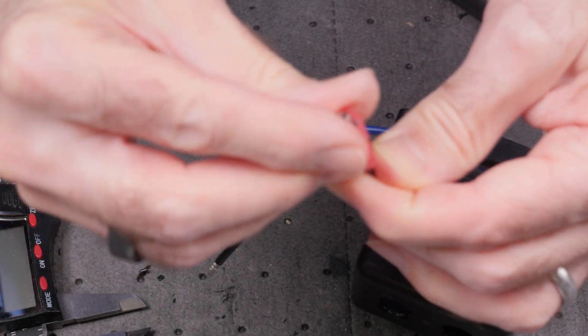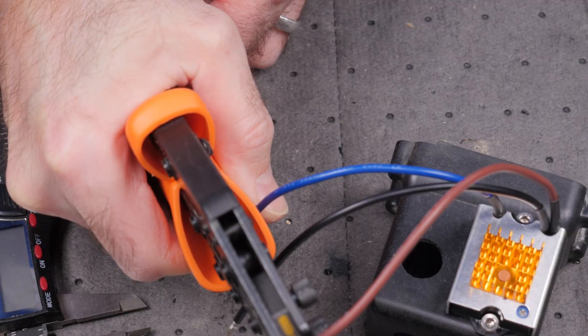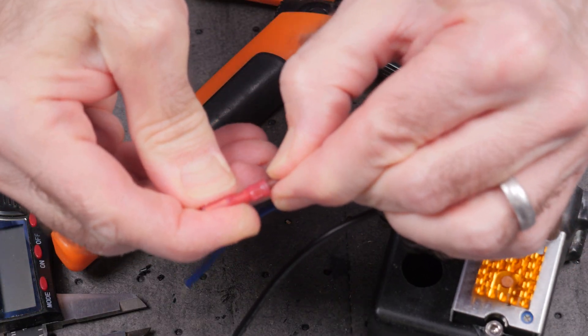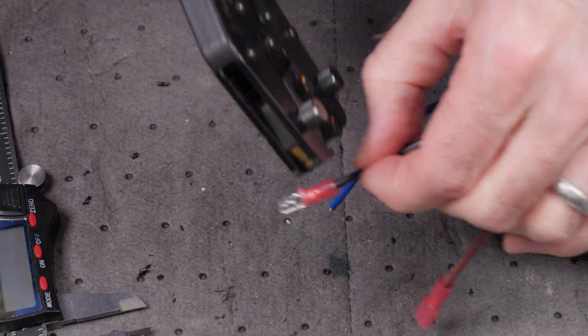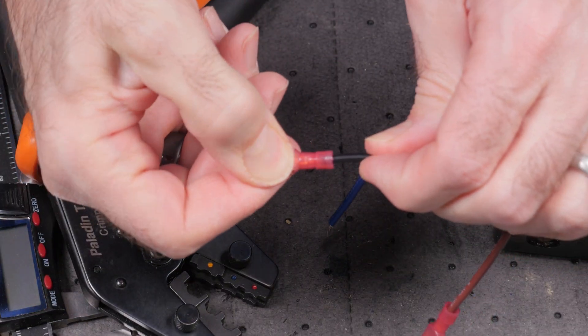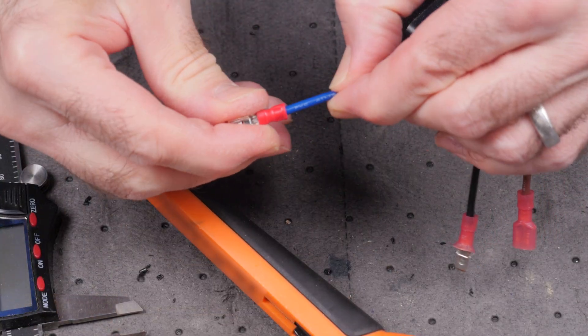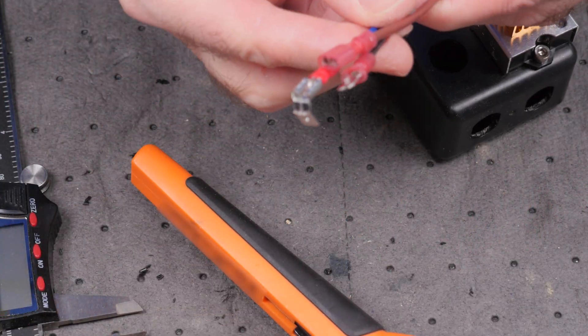I installed spade connectors on the leads from the soft start device to mate with the already existing connectors on the saw. The brown wire got a female connector. The black wire got a male connector. The blue wire got a piggyback connector. I'll leave links to all the tools and parts I used in this video in the description below.